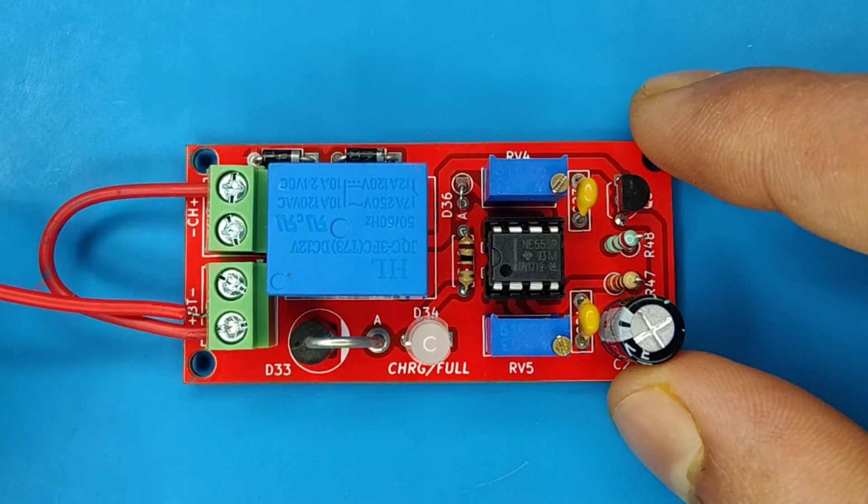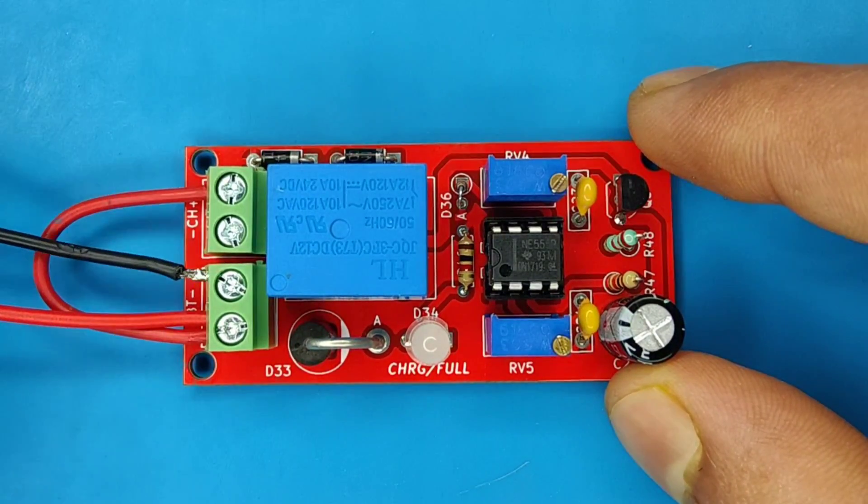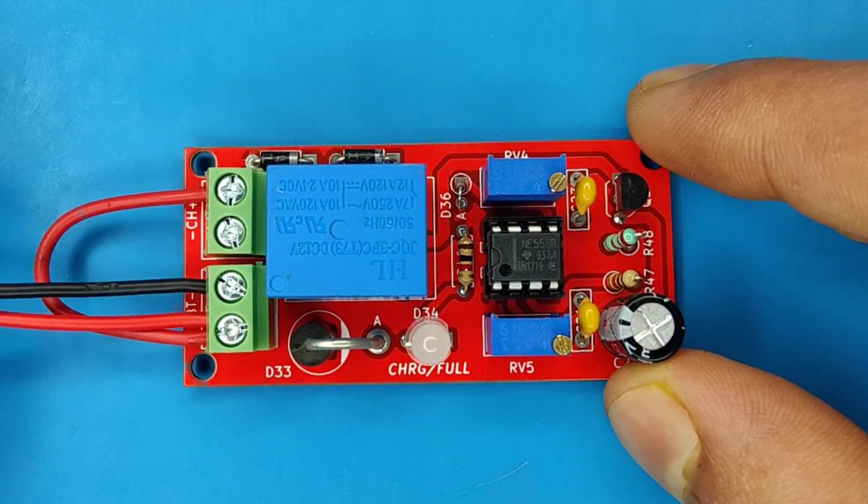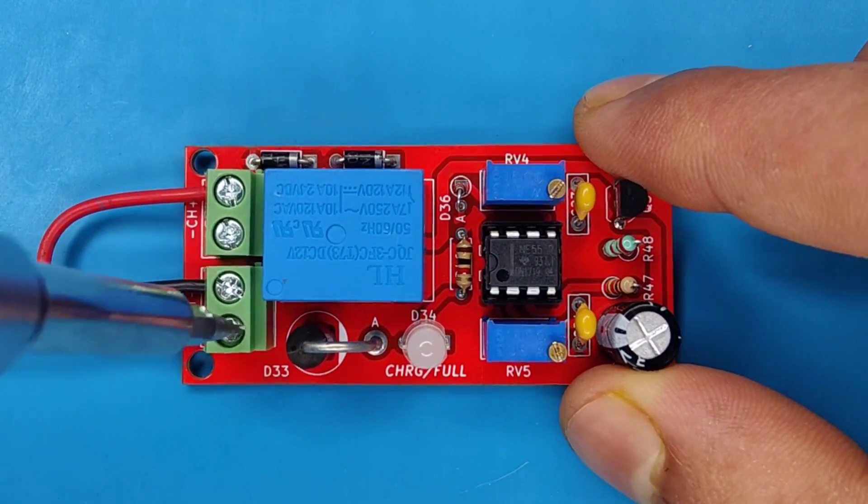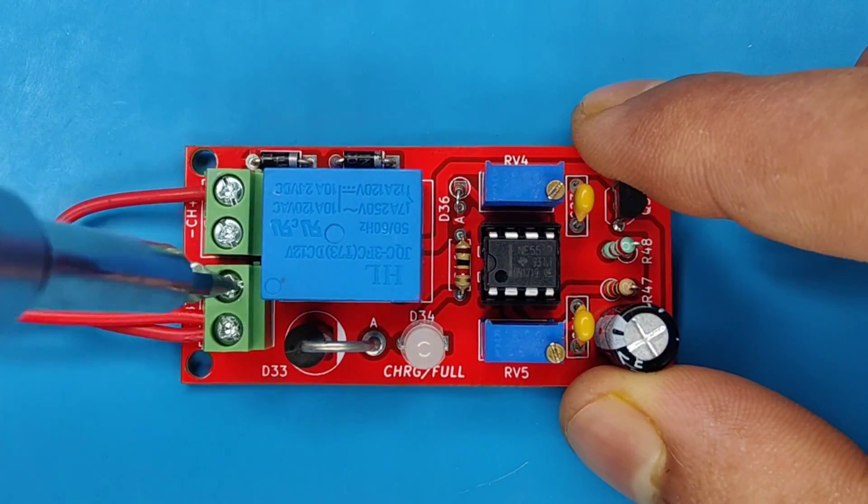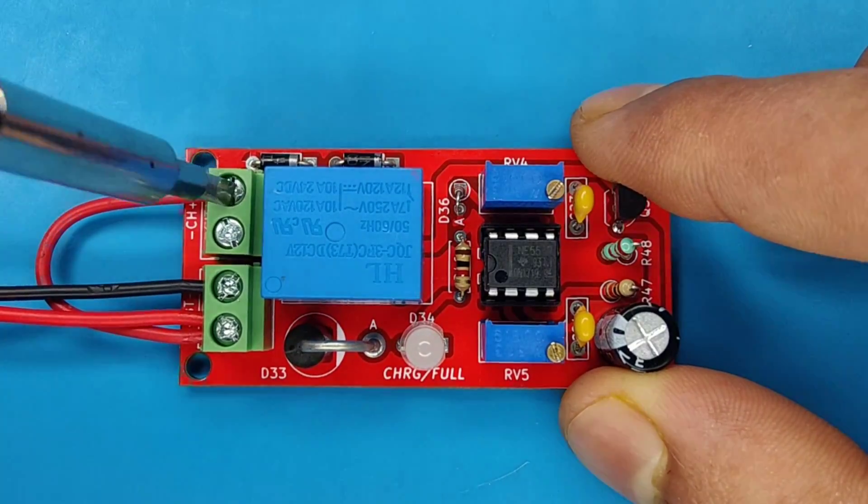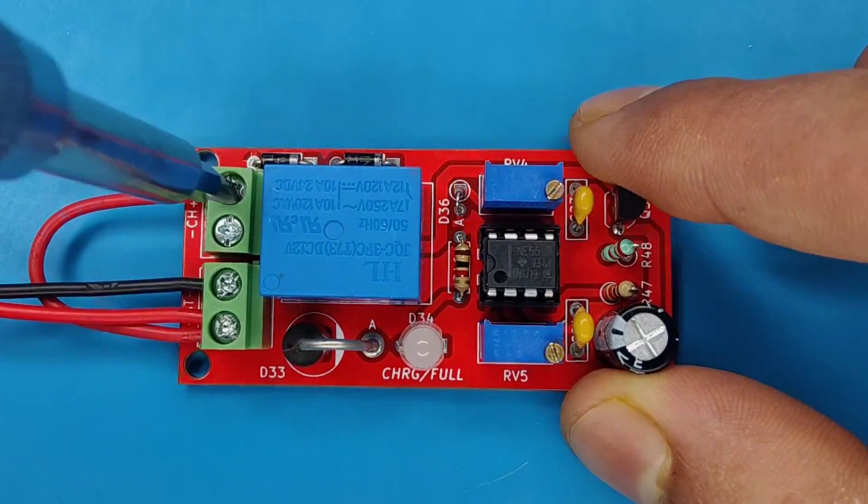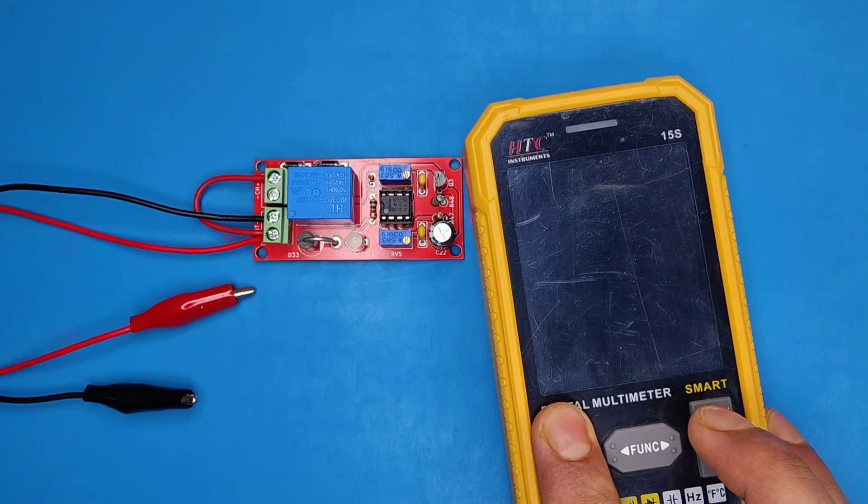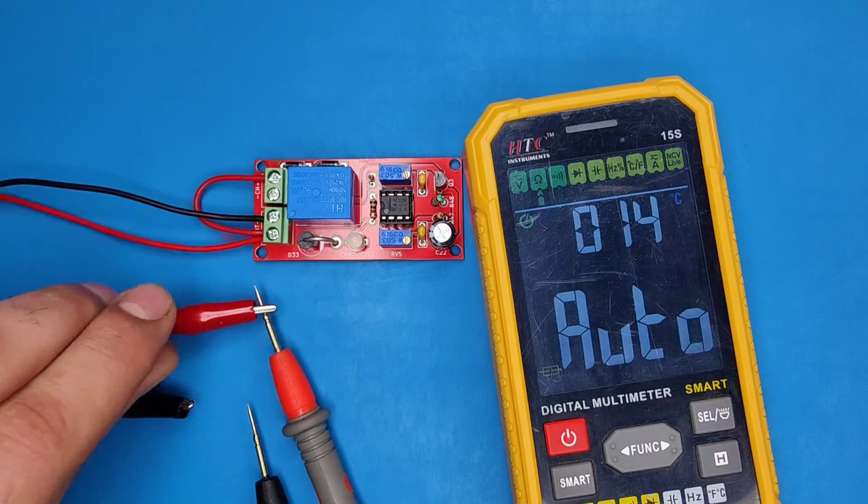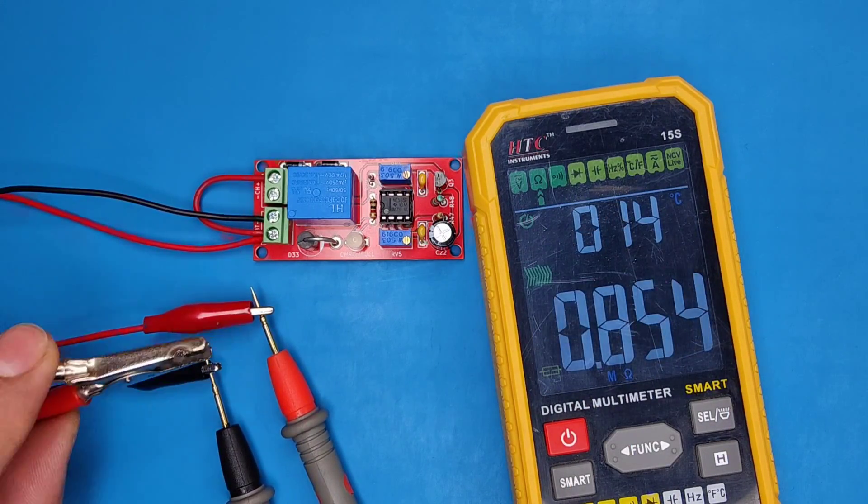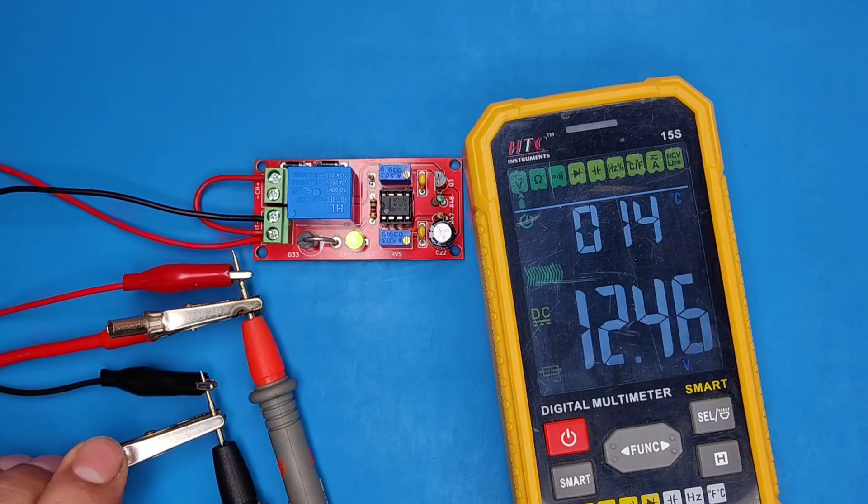Also connect extension wires in output connector. Now use the multimeter to track the voltage. Connect the DC supply, you will see green LED on.